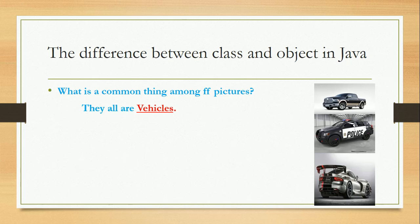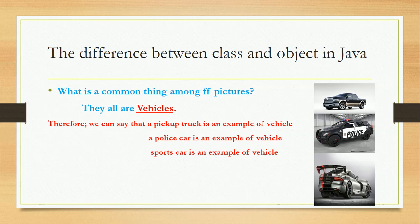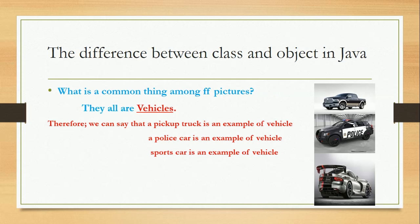Let us see a little deeper. We can say that a pickup truck is an example of a vehicle, a police car is an example of a vehicle, or a sports car is an example of a vehicle. In other words, we can say that a pickup truck is an instance of a vehicle, a police car is an instance of a vehicle. A vehicle type has its own states and behavior.